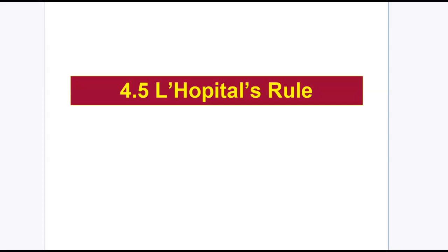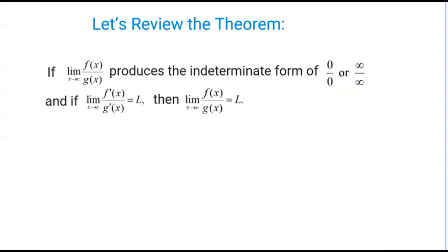In section 4.5, we're going to be studying L'Hôpital's rule. This is what the theorem states: if the limit as x approaches c of f(x) divided by g(x) produces the indeterminate form of 0 over 0 or infinity over infinity, and if the limit as x approaches c of f prime(x) divided by g prime(x) equals L, then the limit as x approaches c of f(x) over g(x) equals L.